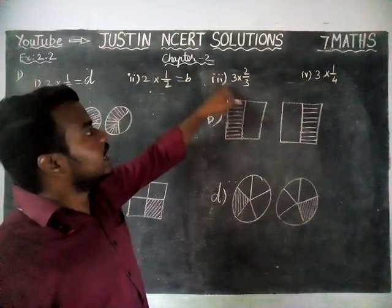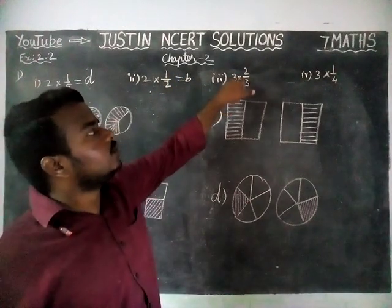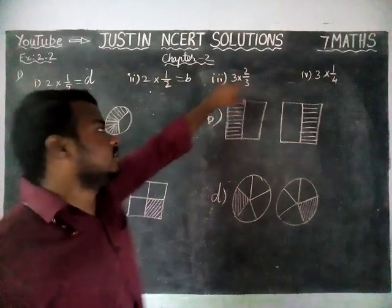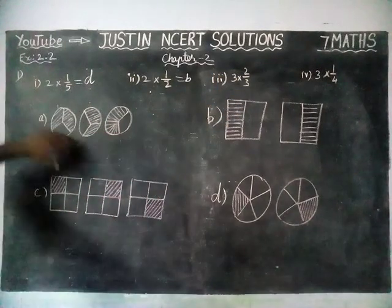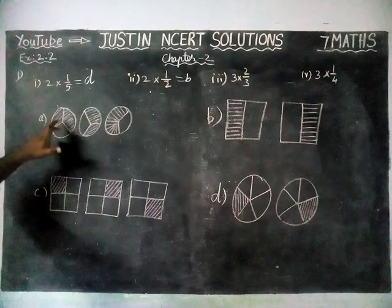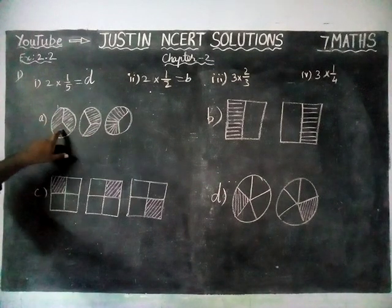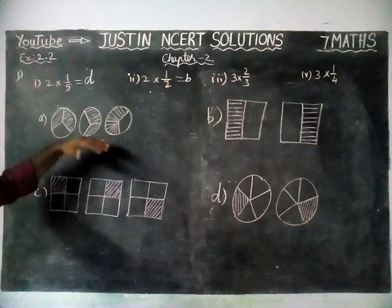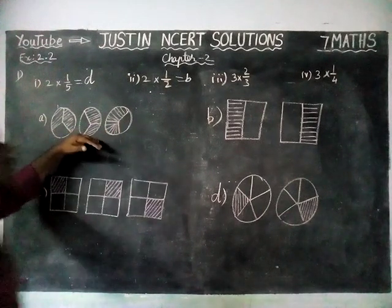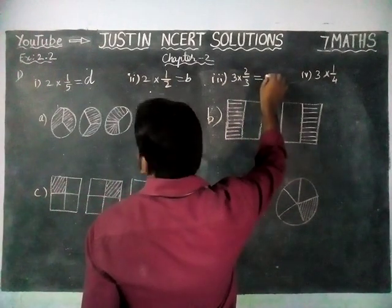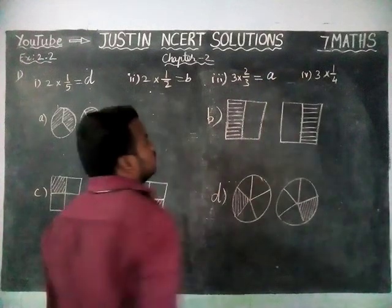Next, third question: 3 into 2 by 3. Out of 3 parts, 2 parts are shaded. And here we have 1, 2, 3 — out of 3 parts, 2 parts are shaded. So this is the correct answer. And we need 3 pictures — 1, 2, 3 pictures we got. So this is the only correct answer for 3 into 2 by 3. It is equal to Option D.